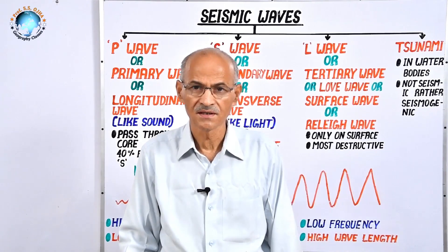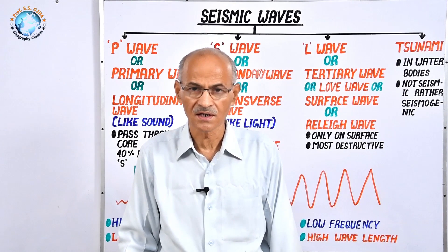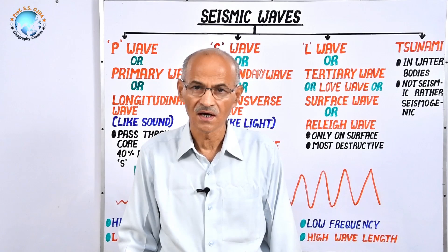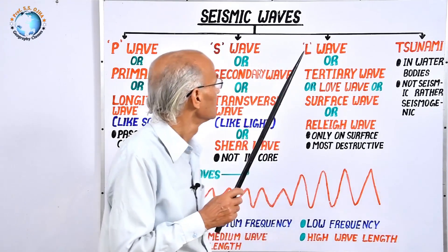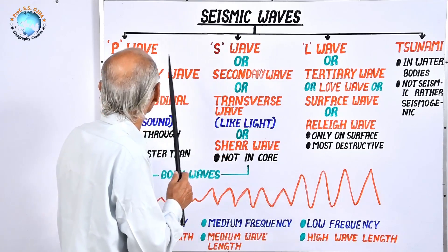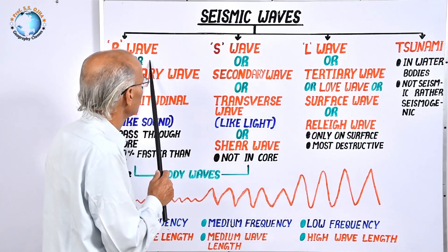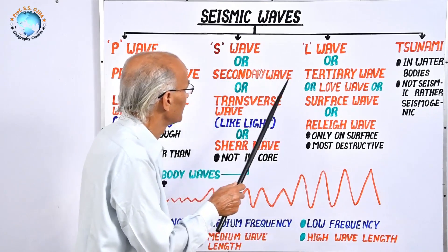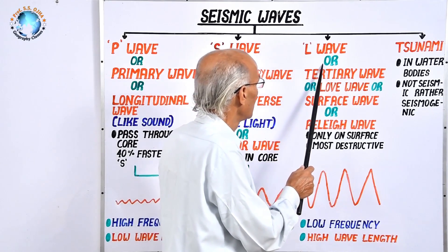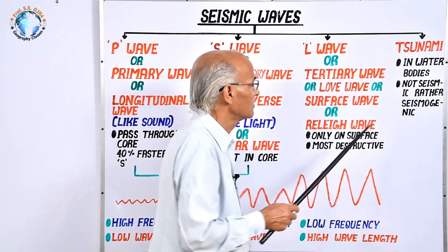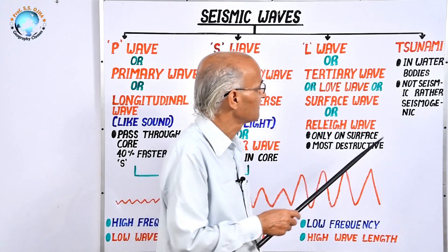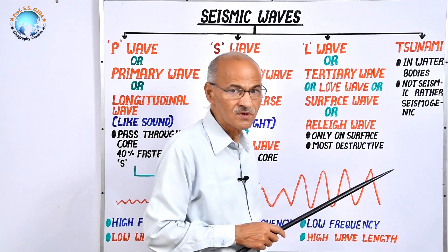Elastic energy in seismology travels through waves across the Earth's interior and circumnavigates the entire surface. These waves are of three types: P wave (primary wave), S wave (secondary wave), and L wave (love wave). The last one, tsunami wave, is not a seismic wave — rather it is a seismogenic wave.